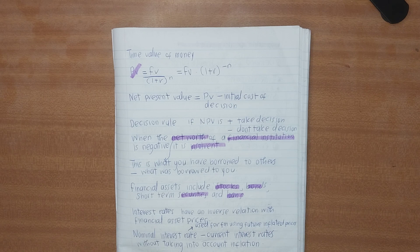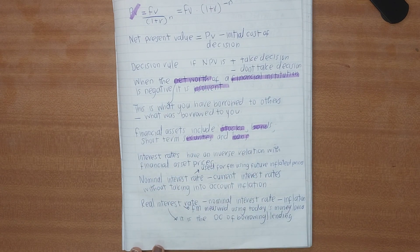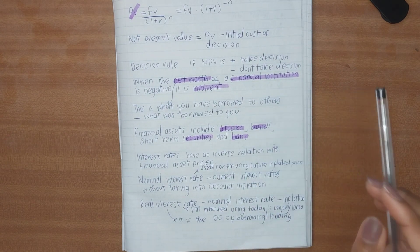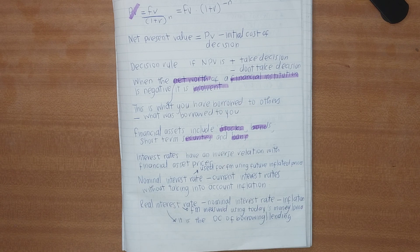Financial assets are also called financial instruments — we have stocks, securities, and loans, and we've already defined their markets. We also have two types of interest rates: the nominal interest rate and the real interest rate. The real interest rate is an interest rate that has been adjusted for inflation — you take the nominal interest rate and subtract inflation.